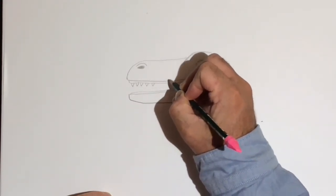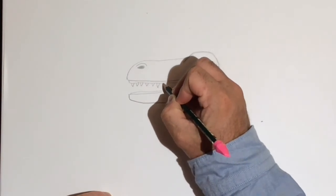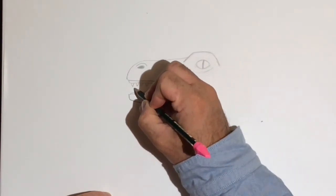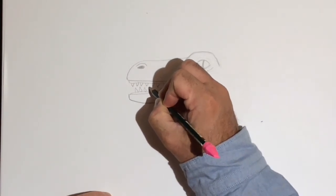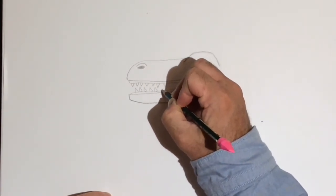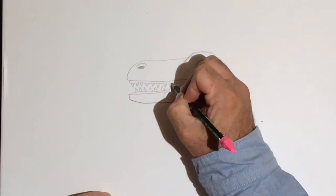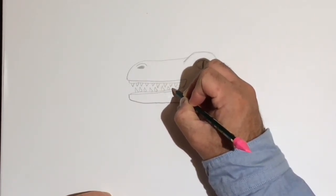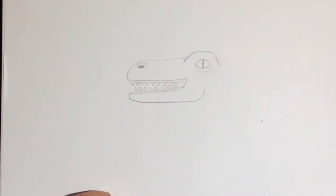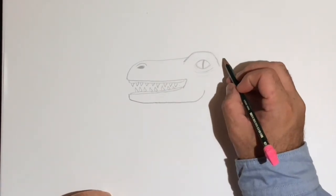They're little triangle shapes. You can make them bigger if you want. I'm going to put the same shape down below.